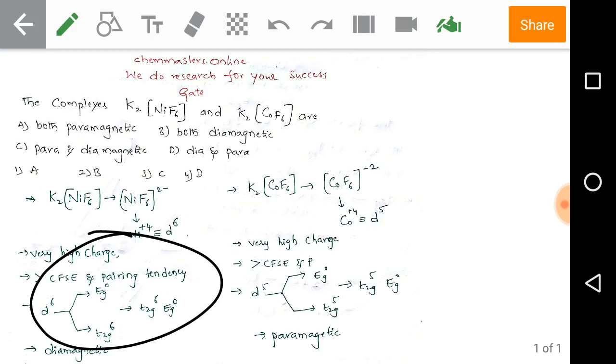when we take the energy levels of t₂g and eg, the total 6 electrons are paired up in the t₂g level only. This is due to the very high charge on nickel (+4), which leads to crystal field stabilization energy and the pairing tendency of all 6 electrons.